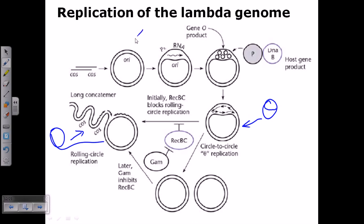using the cos site, it forms a circular DNA. Once it forms a circular DNA, from the origin of replication site the transcription begins and it starts to produce the RNA. As it starts producing RNAs,